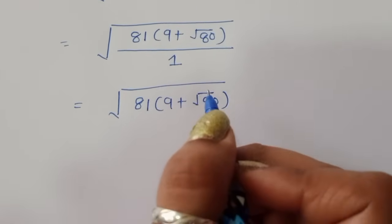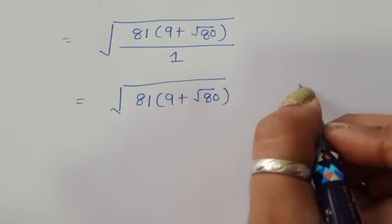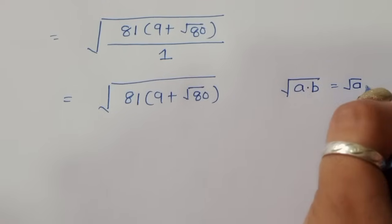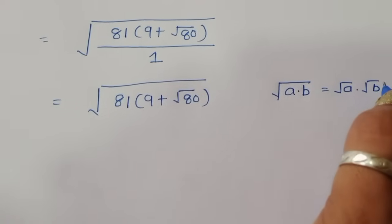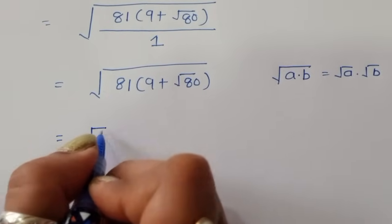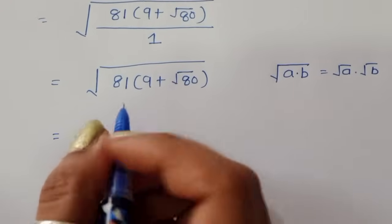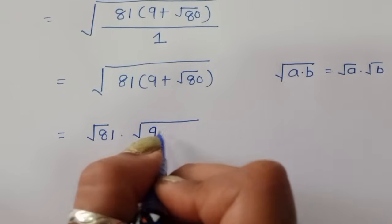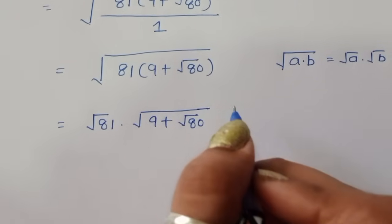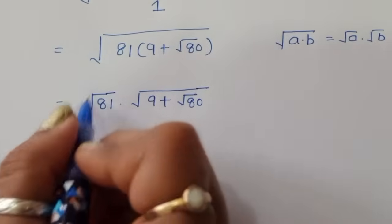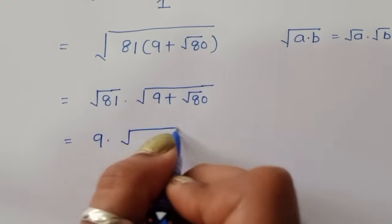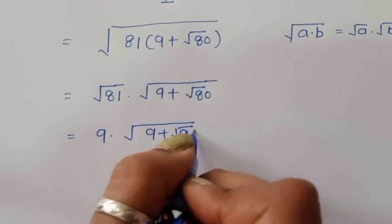We know the formula that if square root of a times b is given, we can write it as square root of a times square root of b. Using this formula, we can write square root of 81 times square root of 9 plus square root of 80. Since square root of 81 is 9, this becomes 9 times square root of 9 plus square root of 80.